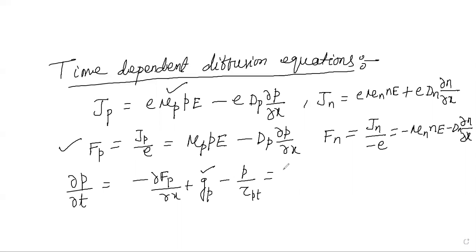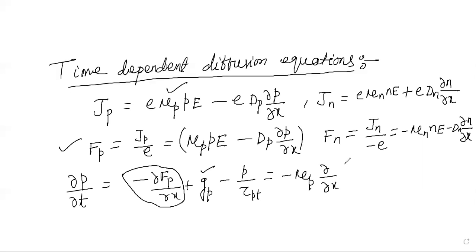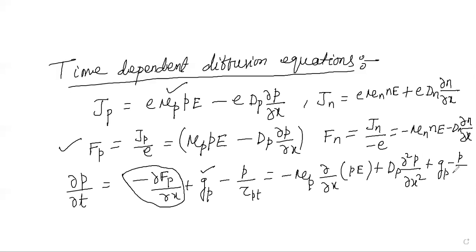Now substituting the value of the hole flux F_P into the continuity equation, the first term — minus del F_P by del x — becomes: minus del by del x of (mu_P times P times E minus D_P times del P by del x). Expanding this gives: minus mu_P times del(PE) by del x plus D_P times del squared P by del x squared. Adding G_P minus P by tau_pt gives the full expression for del P by del t.